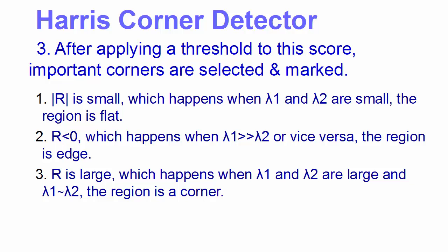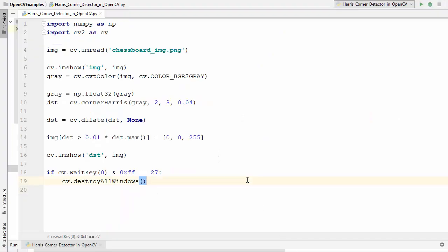So this was the theory about Harris corner detector. Let's see how we can use this Harris corner detection concept inside OpenCV using our Python code. I have this script already written here. Just import cv2 and numpy, and then we're reading this image called chessboard_image.png using imread method.